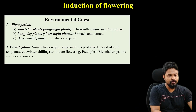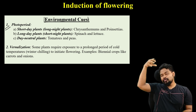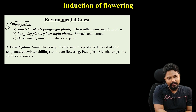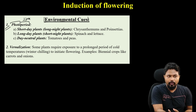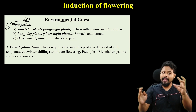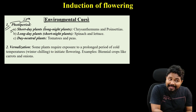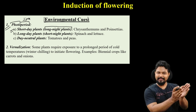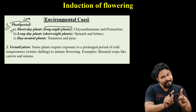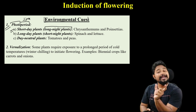External cues: photoperiod — the duration of light. The question is how many hours of light are available. Short-day plants are actually long-night plants. Short-day plants require long nights to flower, so they are called long-night plants. Examples of long-day plants include spinach and lettuce.